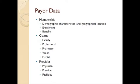Our claims data have a few flavors: facility and professional claims, pharmacy claims, vision and dental. For each type of claim there are different styles of information, but for most we have diagnosis codes, procedure codes, places of service where the service was rendered, and the rendering provider, practitioner, or prescriber. We also have resource information for providers in state — whether a physician, their practice, physician organizations, how they aggregate across the state, and facilities and clinics.